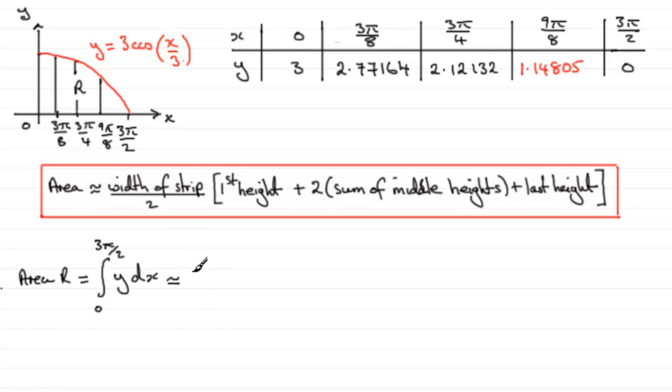We can say it's approximately half the width of a strip, so put a half here. The width of a strip is 3π over 8, so 3π over 8, and then we multiply that by the first height. Well the first height when x is 0 comes out as 3, as you can see here, so it'd be 3 plus twice the sum of the middle heights.